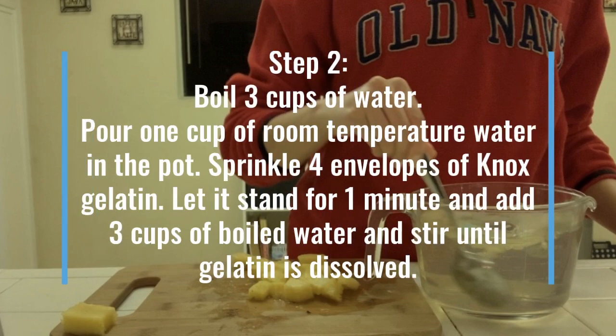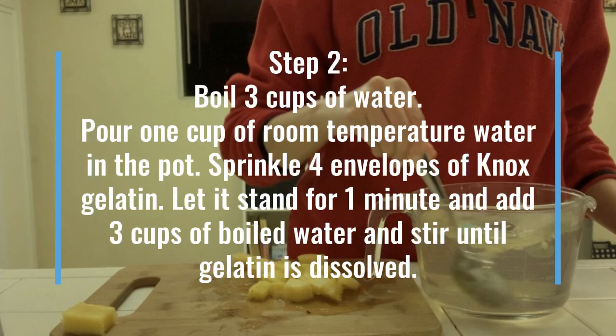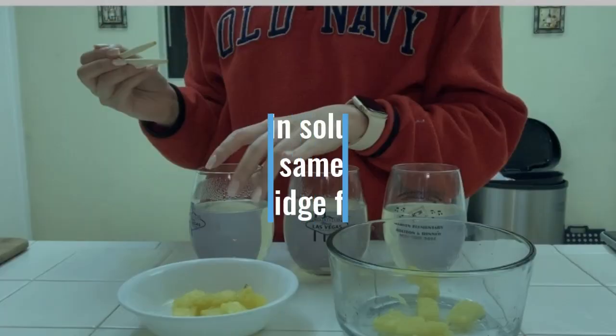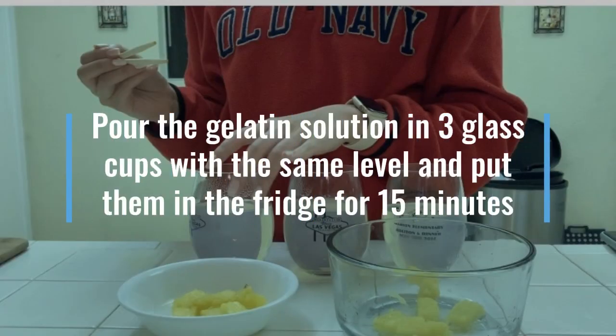In this step, we will prepare our gelatin. Follow the instructions and it may take a while for the gelatin to set. Then pour the gelatin into three glasses at the same level and put it in the fridge for 15 minutes to solidify.